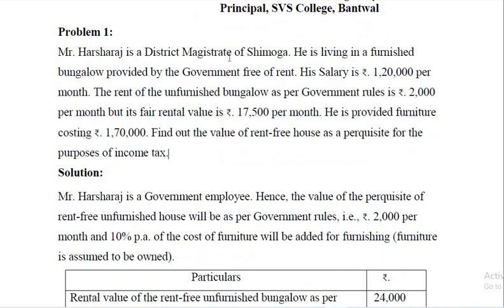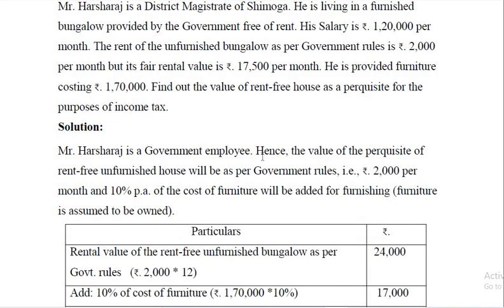He is a government employee. In the case of a government employee, the perquisite value is equal to the license fee or rent as determined by the government rules. As per government rules, the license fee or rent prescribed is ₹2,000 per month. All other things — his salary, fair rental value — are to be ignored. The value prescribed by the government is what should be taken.